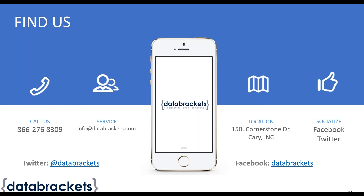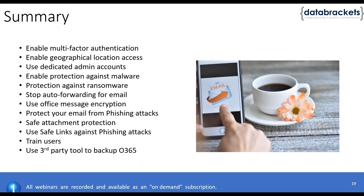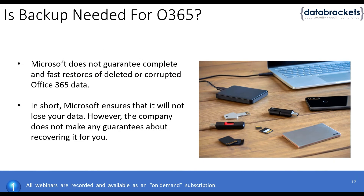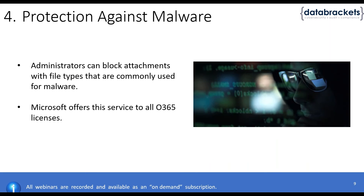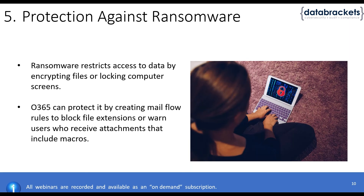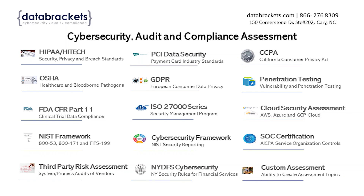We can use Microsoft's built-in tools to protect Office 365 attachments, which I think are fairly good. You can block attachments with known file types that commonly carry malware or macros, such as .VBS scripts. These can be blocked automatically through Microsoft, which would be the starting point for attachment protection.